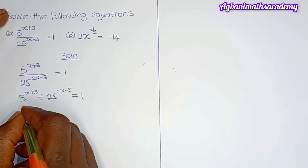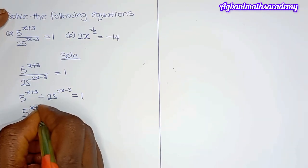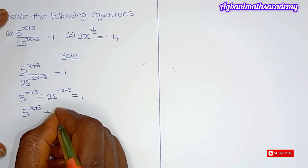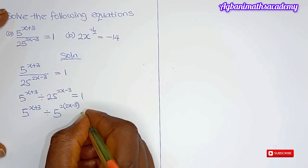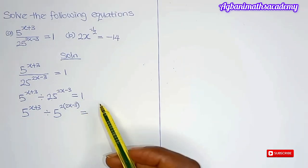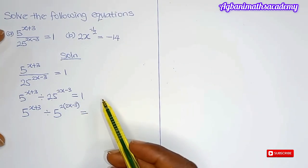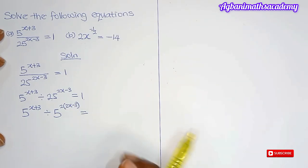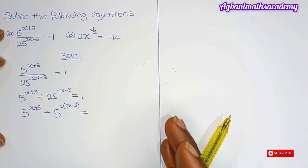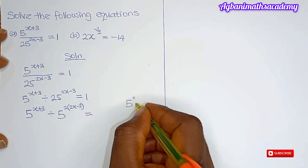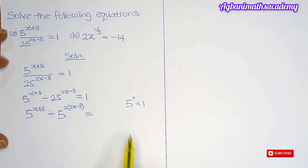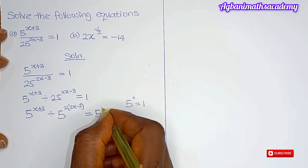So we can write 5 to the power of x plus 3, divided by 5 to the power of 2, bracket 2x minus 3, is equal to... Now we have 1 on the right. Can we convert 1 to a base of 5? Yes, we can, by applying the zero law of indices, which states that any number to the power of 0 is equal to 1. This means 5 to the power of 0 is equal to 1. So instead of 1, we replace it with 5 to the power of 0.